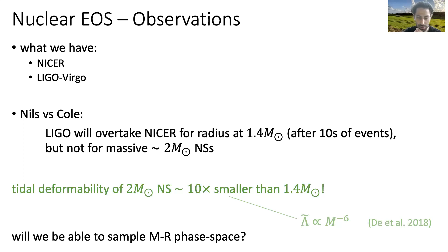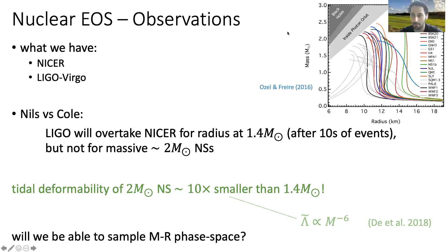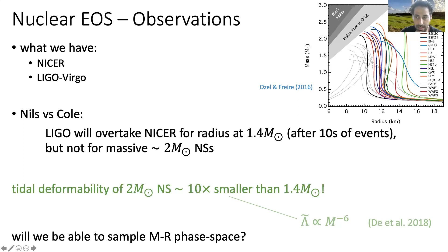This begs the question: the gold standard of what we're trying to do with measuring neutron star radius is basically to measure the mass-radius diagram. Having the radius of a 1.4 solar mass neutron star is great, particularly since most mass-radius diagrams for different EOS turn over and don't have huge variation in radius for different masses. But if you want to really understand the full EOS and invert mass-radius into pressure-density, you need to sample this mass-radius diagram — different measurements of radius at different masses — and it's not obvious how well we'll be able to do that.